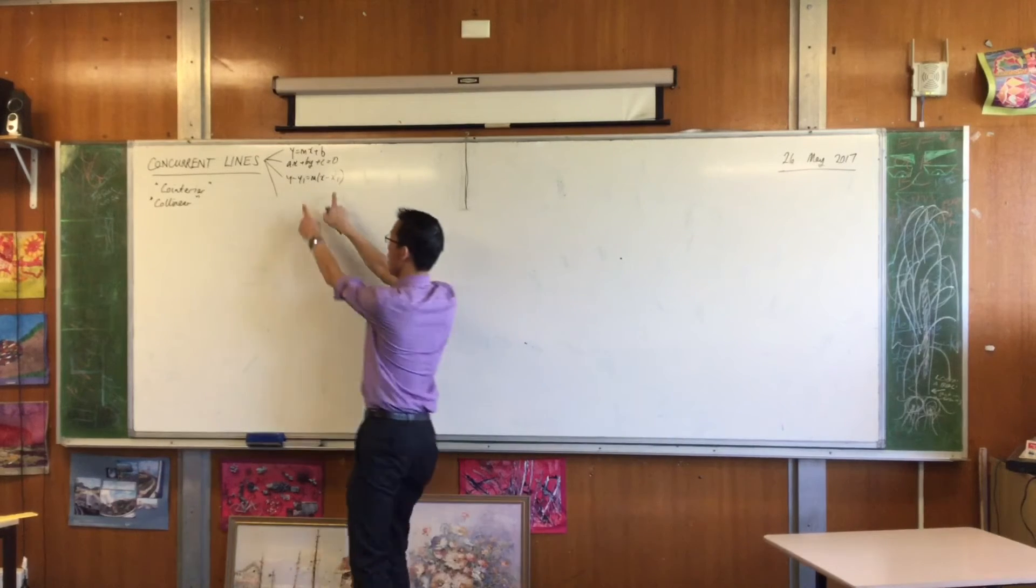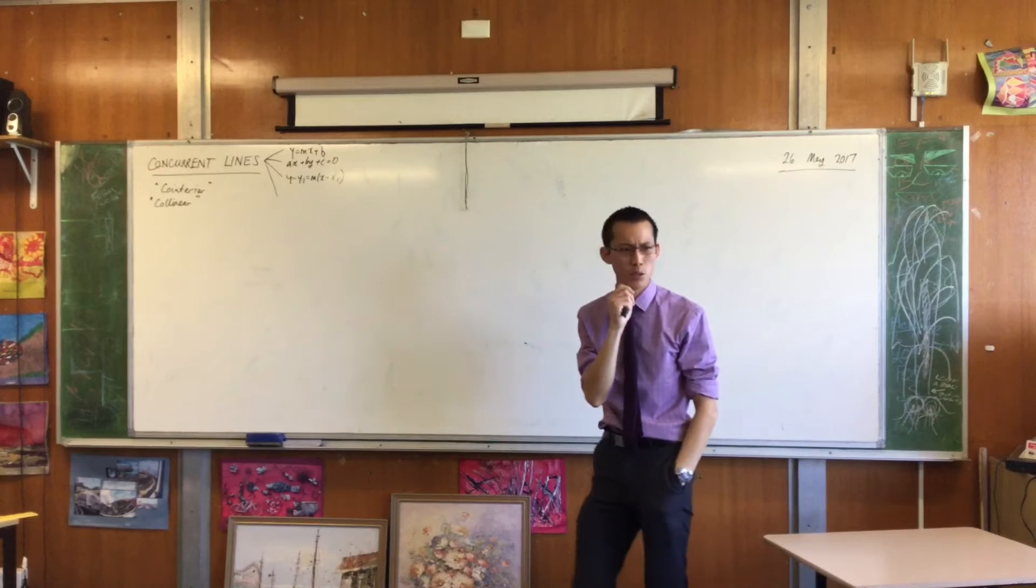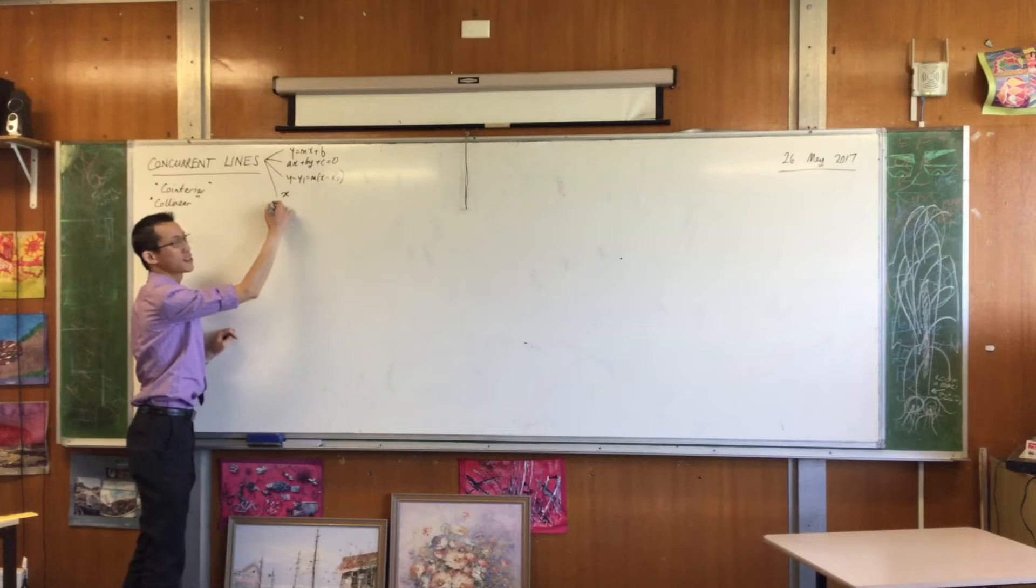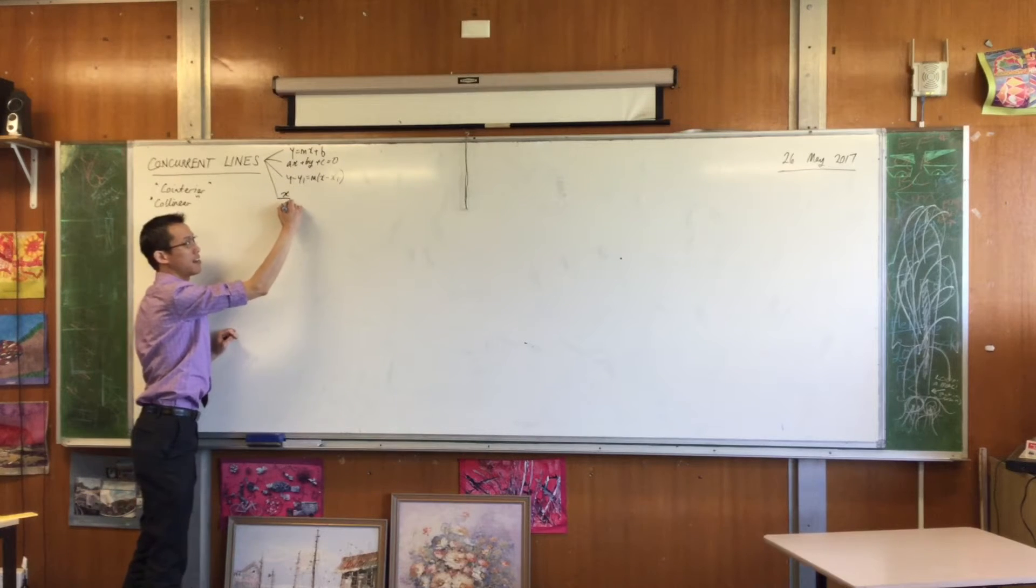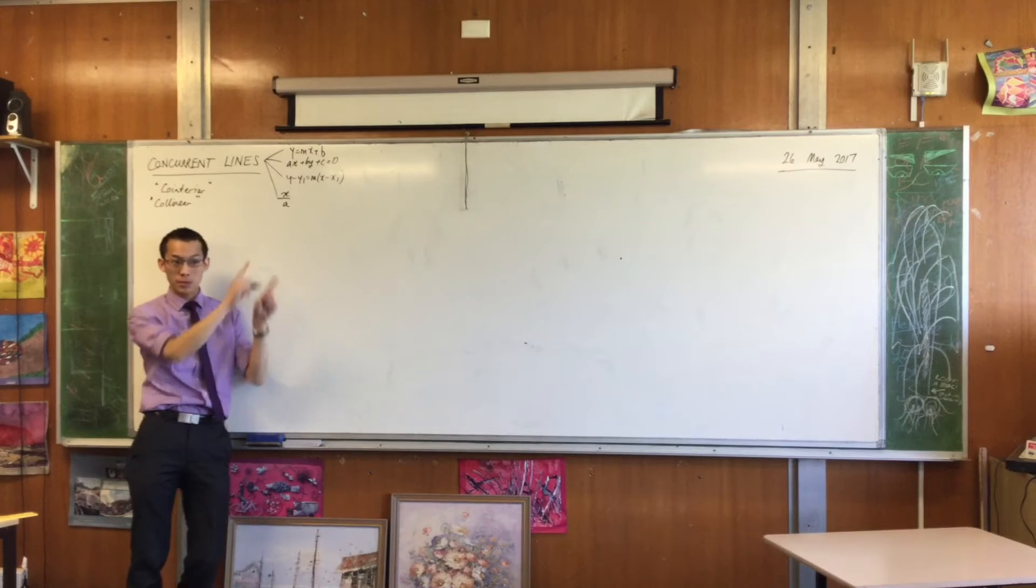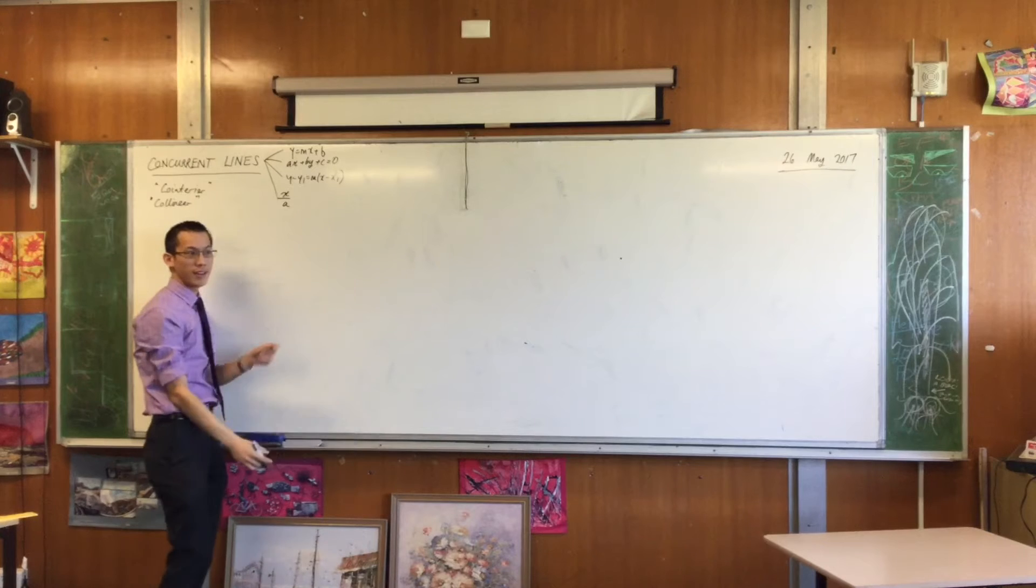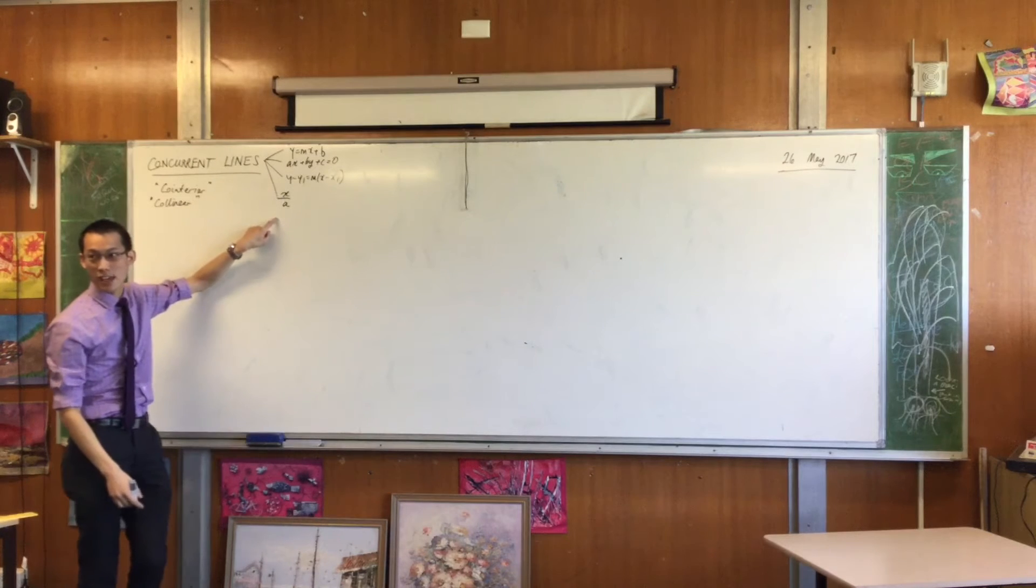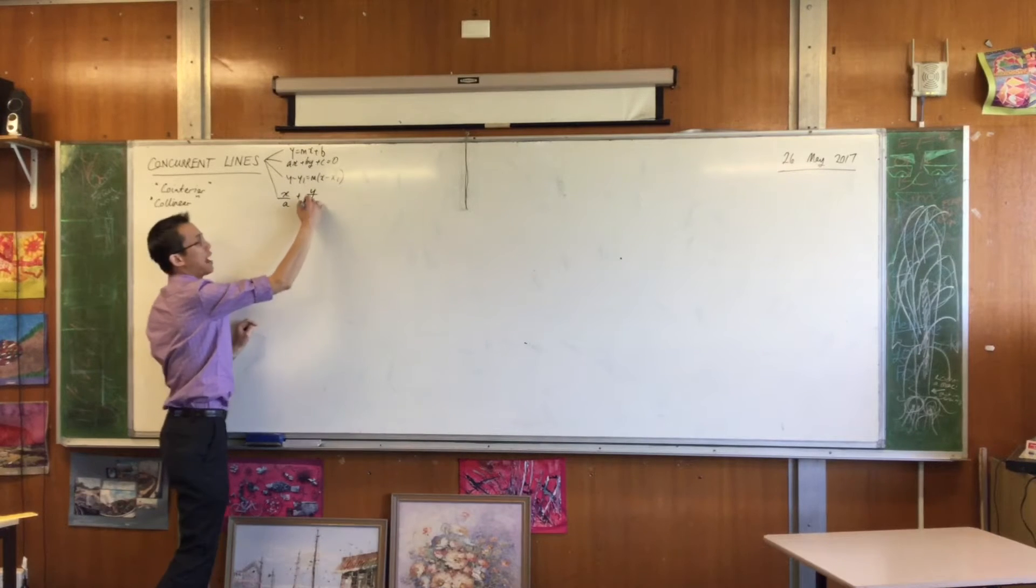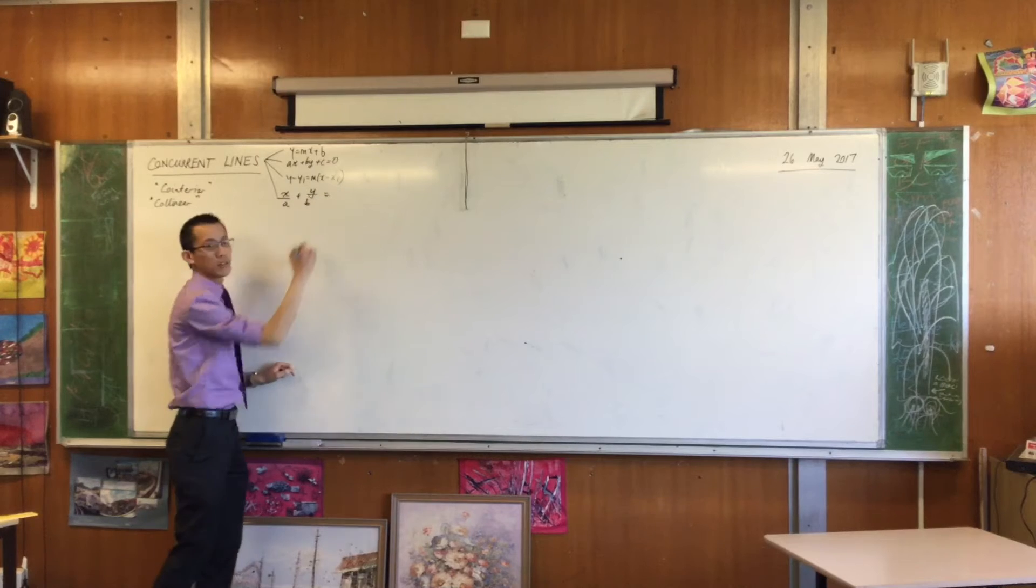Let's get maybe two more. y minus y1 equals m times bracket x minus x1. This one is point gradient. You can literally see the point and the gradient. What's the newest one I taught you? It starts with x over... what does a signify? x-intercept. x/a plus y/b equals 1. This is the y-intercept.